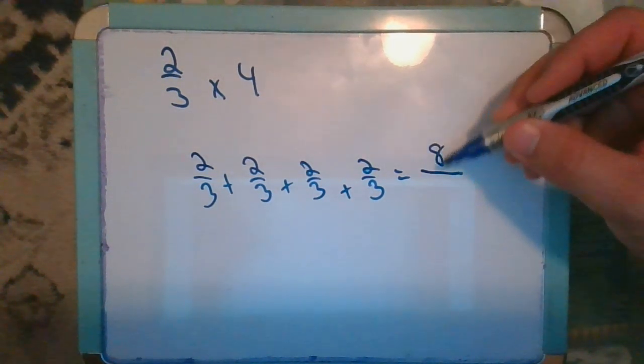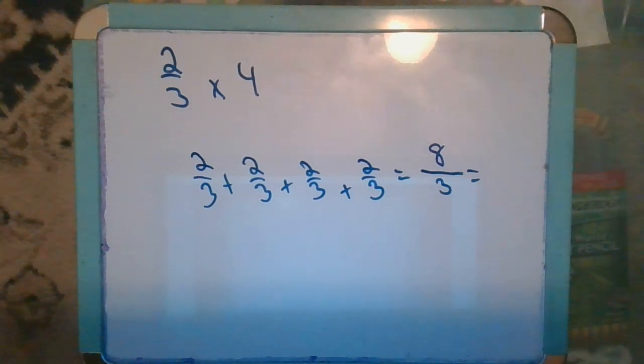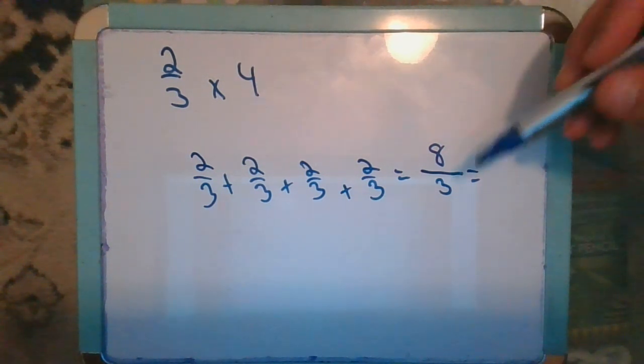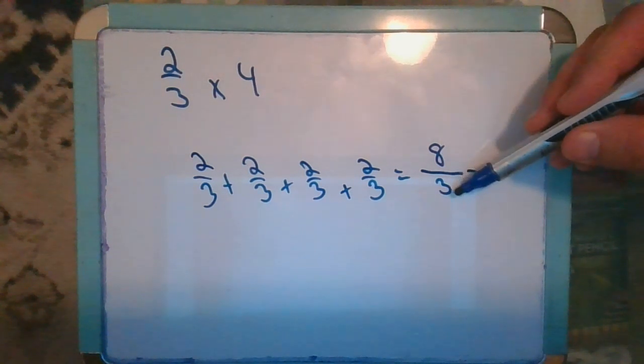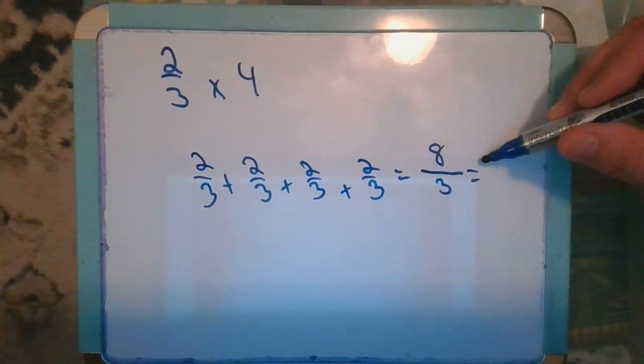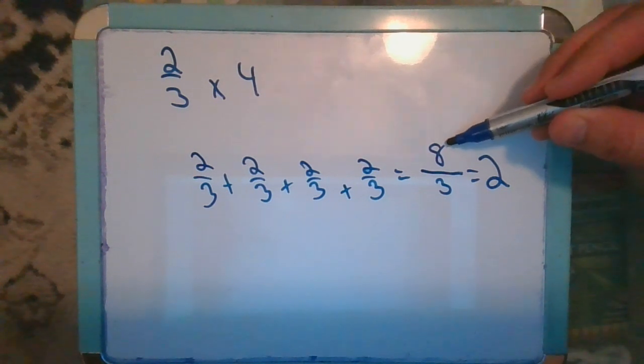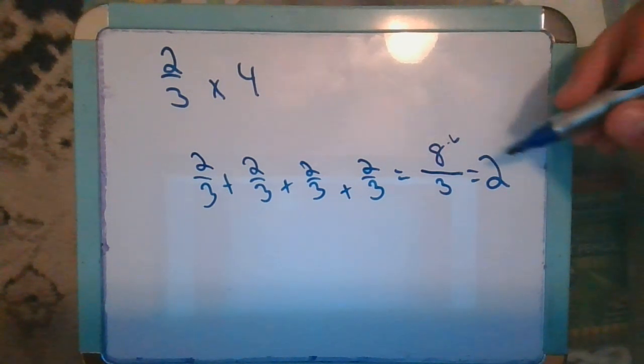I'll have eight-thirds, which we've been practicing making sure we simplify so it makes more sense. Eight divided by three: three goes into eight two full times, which makes six.